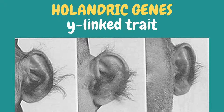What are holandric genes? The genes that are carried on the Y chromosome are called holandric genes. Holandric genes can only be passed by males onto their sons. They code for maleness but sometimes cause rare conditions like hypertrichosis pinnae and color blindness. As you can see in the picture, that is an example of hypertrichosis pinnae, where there is a presence of excessive coarse black hair on the auricle of the human ear.